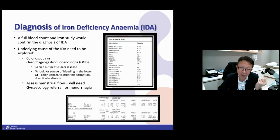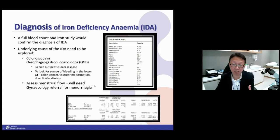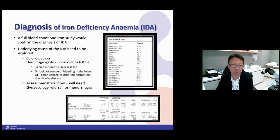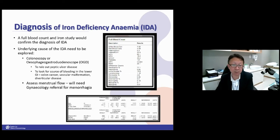Most of the time it's due to bleeding. For older patients, we recommend upper and lower scope to look for underlying problems, especially colon cancer. In young females presenting with iron deficiency, we assess their menstrual history. If they have heavy menstrual flow, we refer them to a gynecologist. Sometimes when you ask, ladies say their flow is normal — but when you probe deeper, you realize it's actually not so normal, as they've considered it normal since they were young.